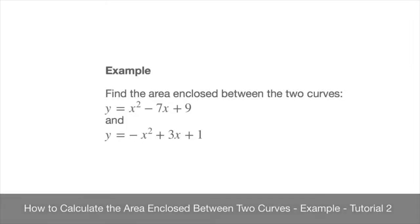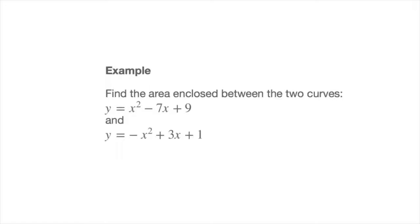In this tutorial we learn how to find the area enclosed between two curves, and we're going to do so with an example. The example is the one we see here. We're asked to find the area enclosed between the two curves y equals x squared minus 7x plus 9, and y equals negative x squared plus 3x plus 1.